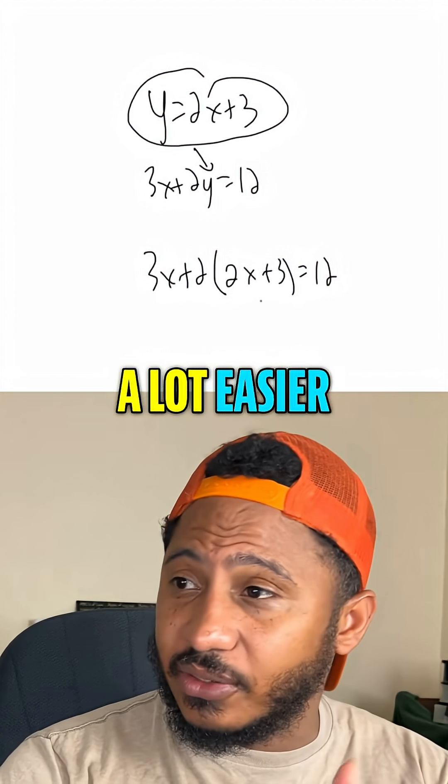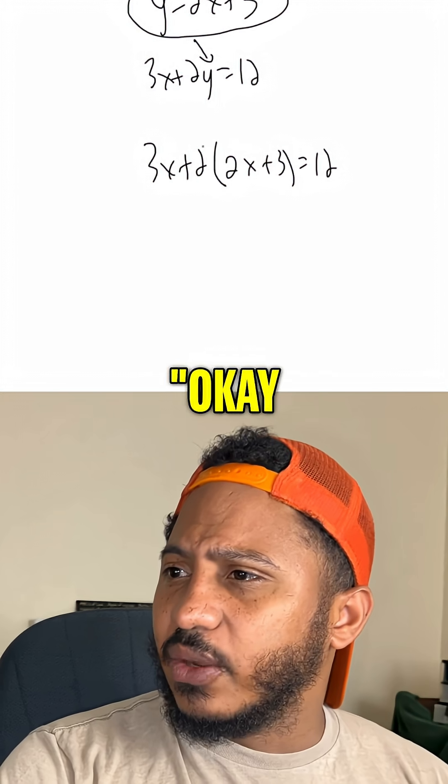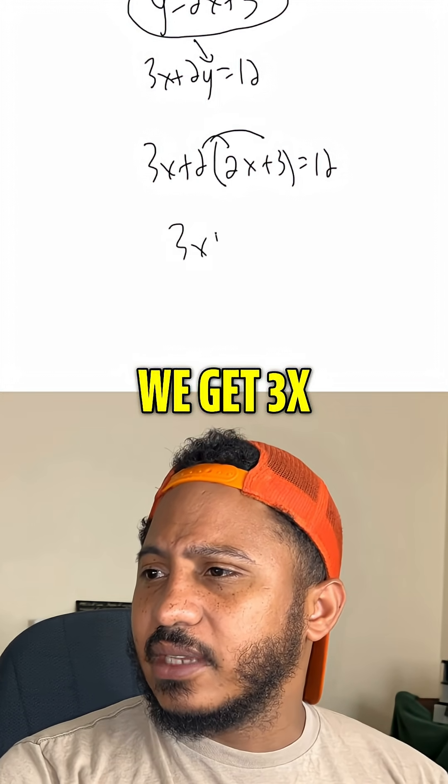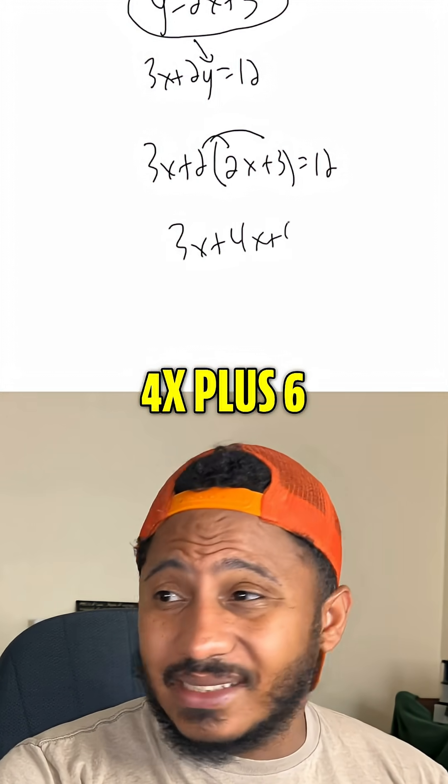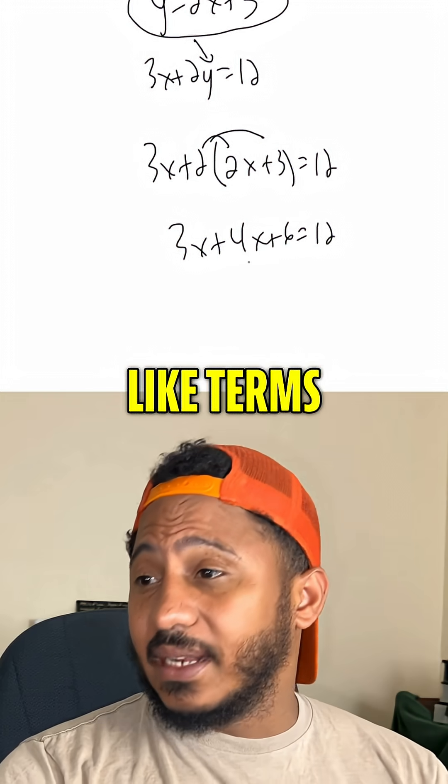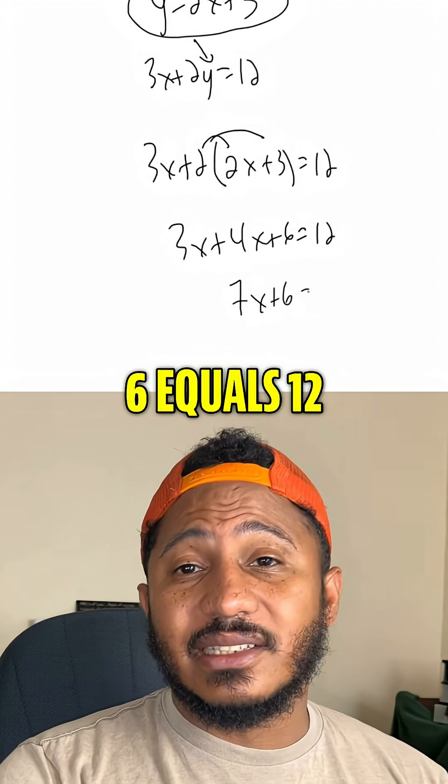And now it's just one equation, one variable, a lot easier to solve. This one's linear. So we say, okay, distribute. We get 3x plus 4x plus 6 equals 12. Combining like terms, we get 7x plus 6 equals 12.